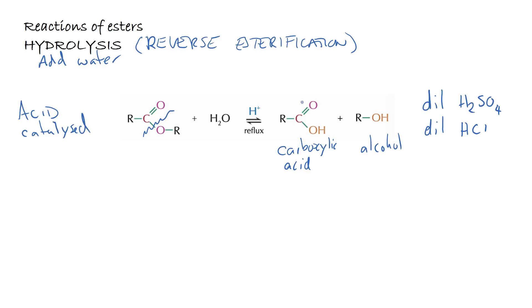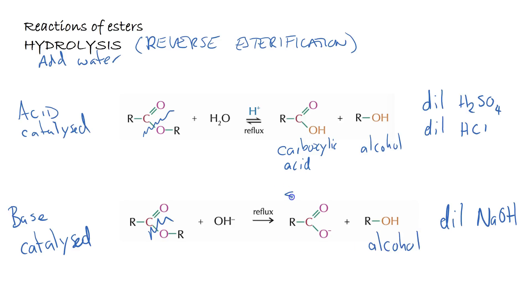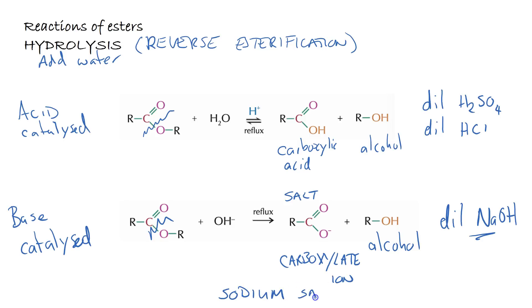The second type of hydrolysis is base-catalyzed, also done under reflux with heat, but using a base such as dilute sodium hydroxide in aqueous conditions. Again, the carbon-oxygen bond is broken and the alcohol forms, but because a base is used, the salt of the acid is formed rather than the carboxylic acid itself — typically the sodium salt or potassium salt depending on whether sodium hydroxide or potassium hydroxide was used.